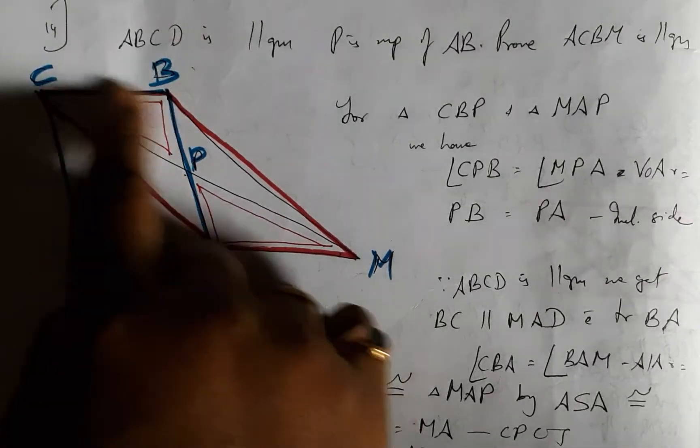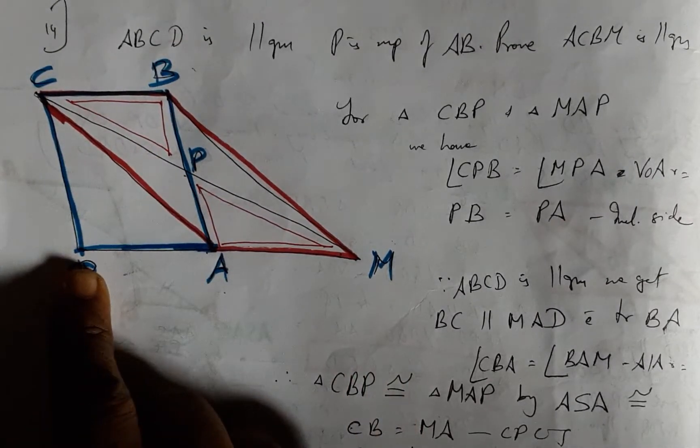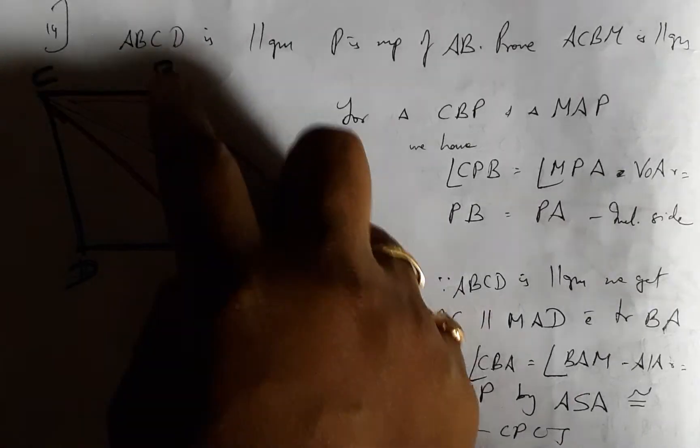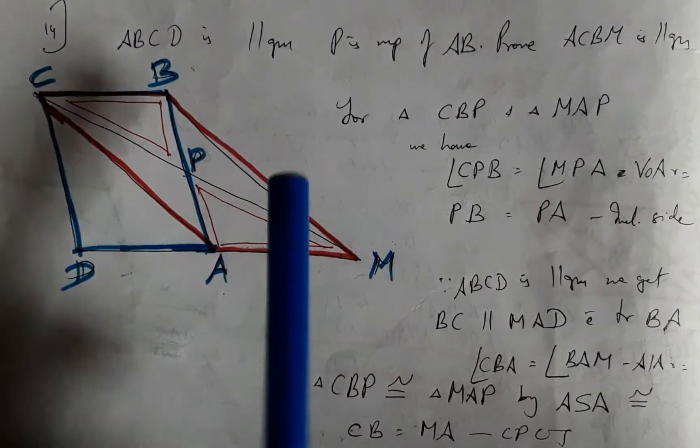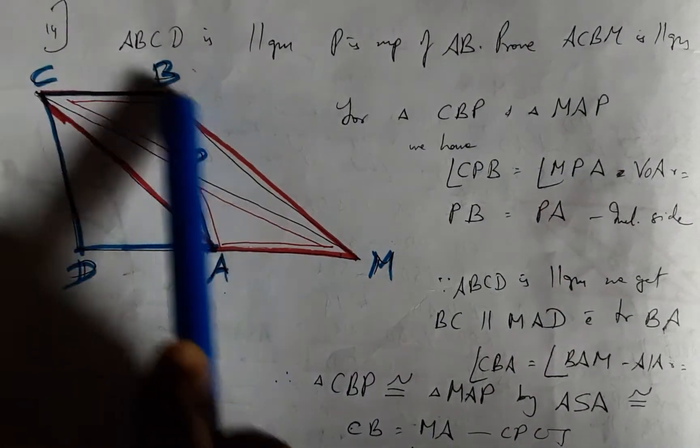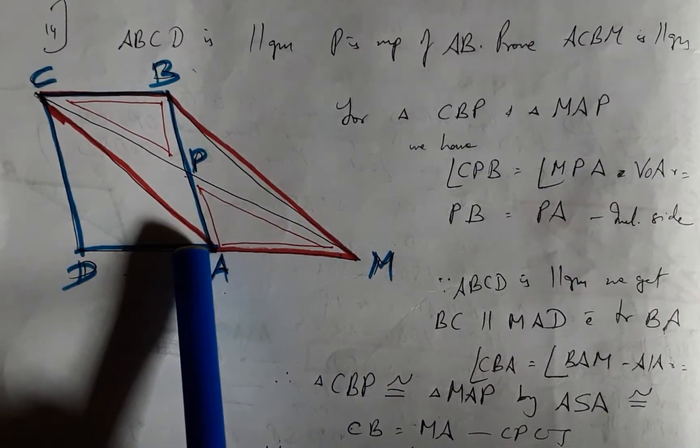We have been given ABCD a parallelogram and P is the midpoint of side AB. And now we are supposed to prove that ACBM happens to be a parallelogram.